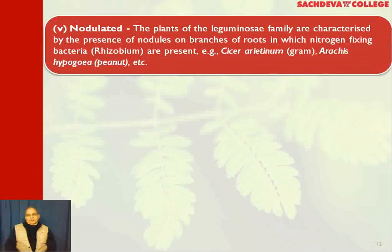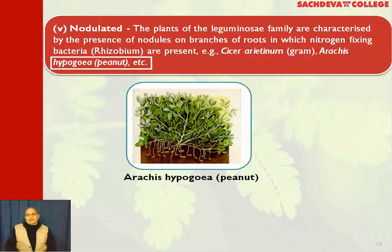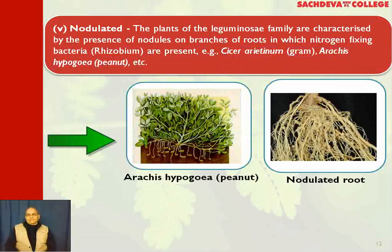Nodulated roots: the plants of the Leguminosae family are characterized by the presence of nodules on branches of roots, in which nitrogen-fixing bacteria — that is, Rhizobium — are present. Examples include Bengal gram (Cicer arietinum) and groundnut (Arachis hypogaea). This is how the root nodules are present in the root. These plants have the ability to fix atmospheric nitrogen, which is why legumes are a good source of protein. Pulses are considered a rich source of protein.